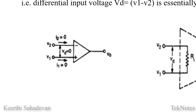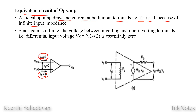Input resistance is infinite. The input terminals — inverting and non-inverting — have infinite input resistance. There is no current at both terminals. Input impedance is infinite, so gain is infinity.